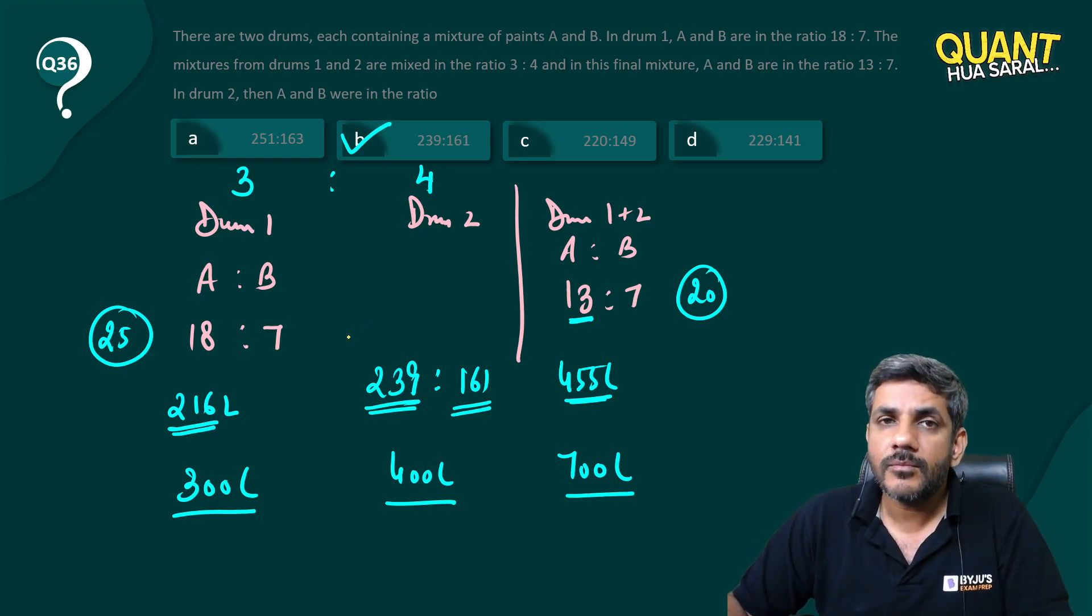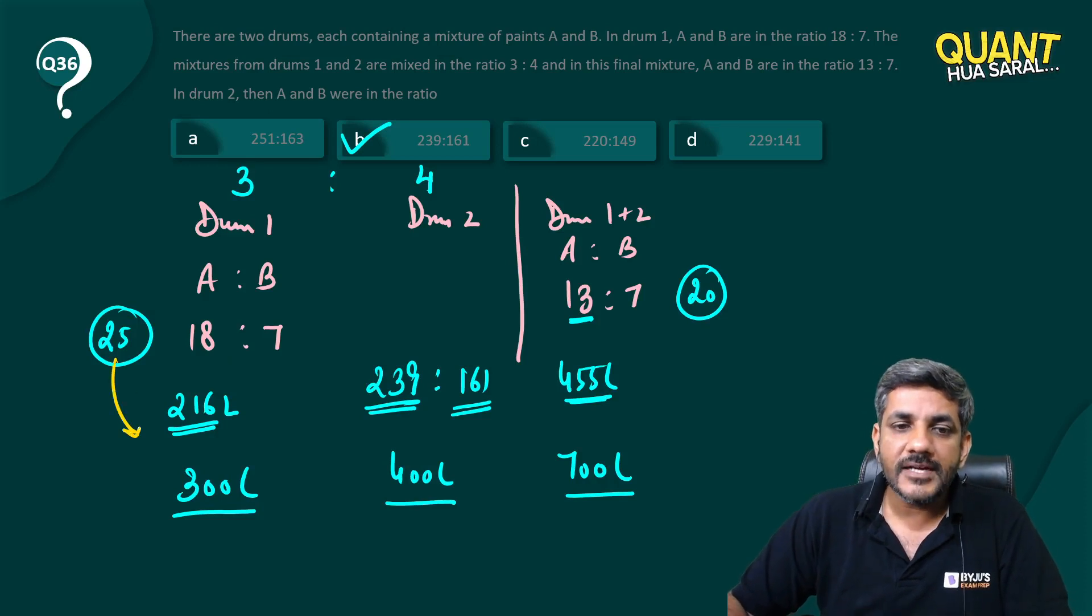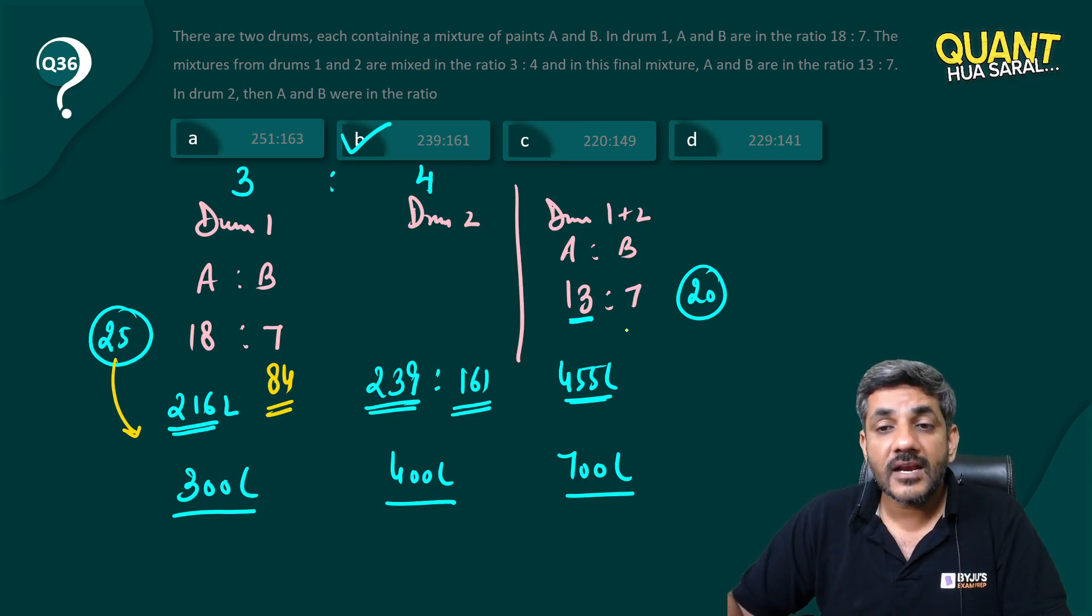25 into 12 is 300. 12 into 7 is 84, right? 20 into 35 is 700. 35 into 7, now 35 into 7 is not that difficult to calculate, it is 245.